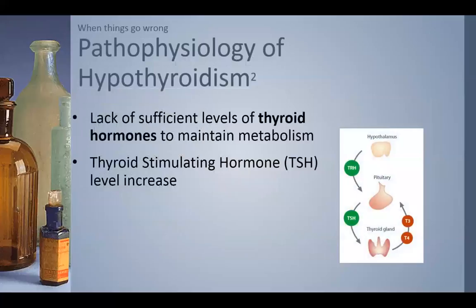Getting back to the pathophysiology of hypothyroidism: this is a negative feedback loop mechanism. When T3 and T4 are low, the hypothalamus senses that low level and again produces TRH acting on the anterior pituitary, which then stimulates TSH production acting on the thyroid. When these two hormones are low and not being produced, the system starts shooting out increased levels of TRH and TSH, which can be very damaging and can destroy thyroid tissue.